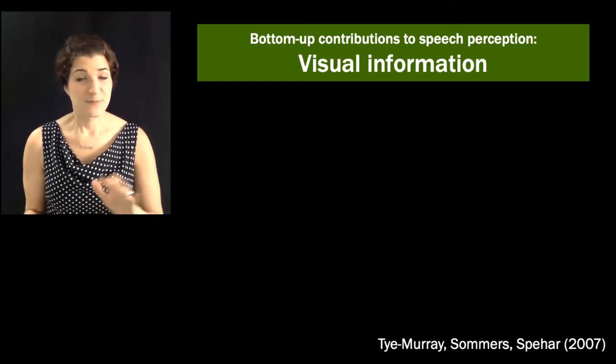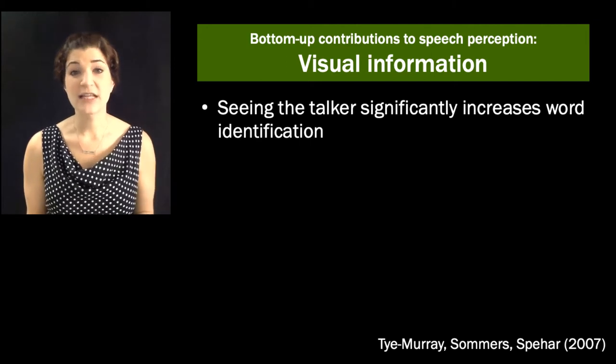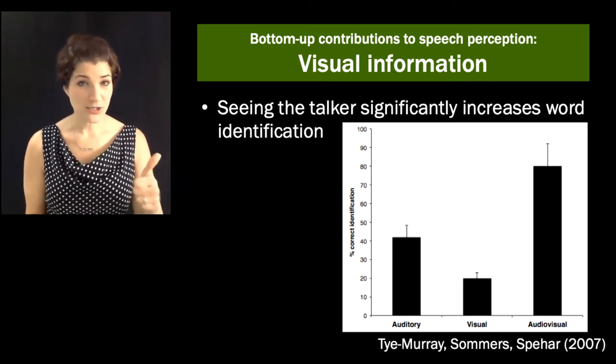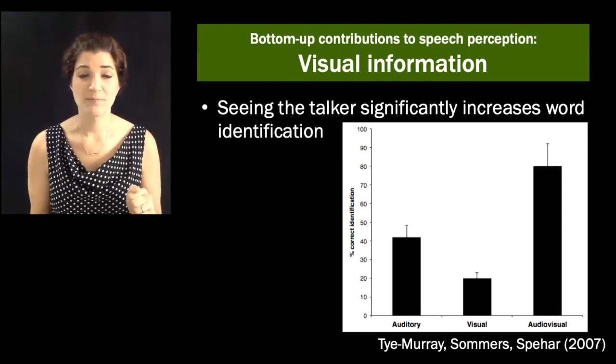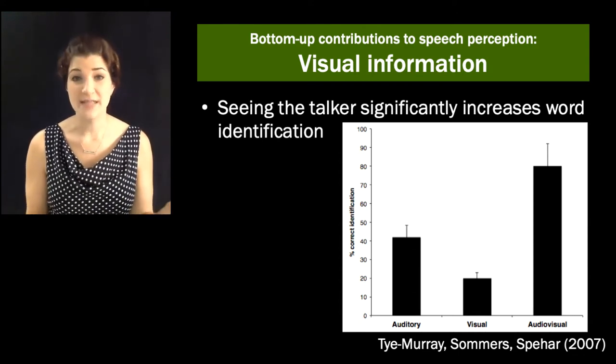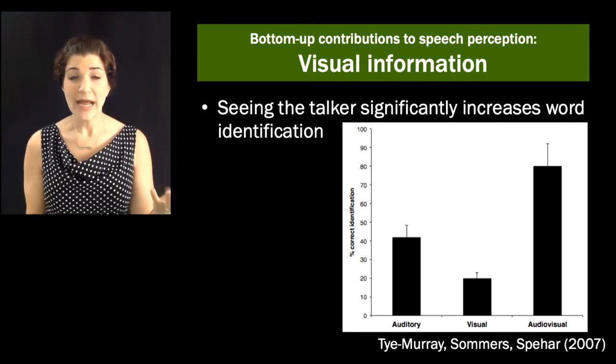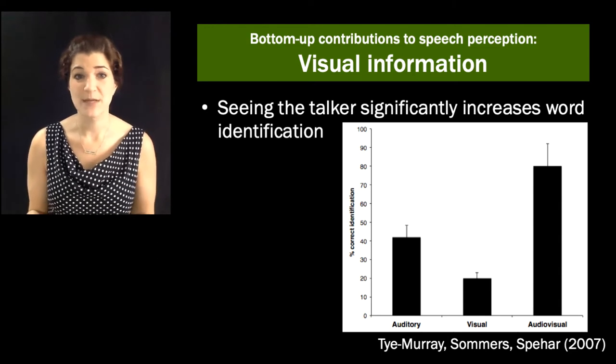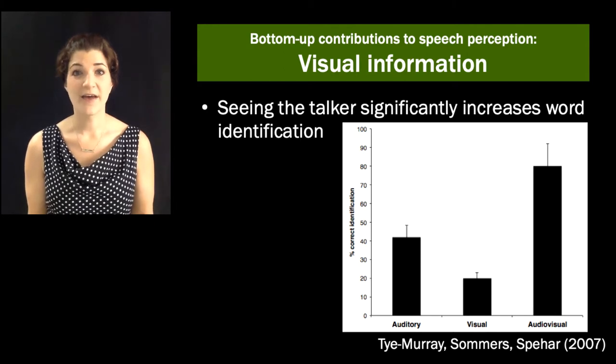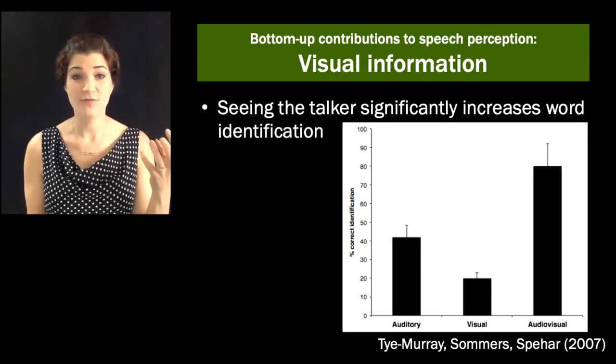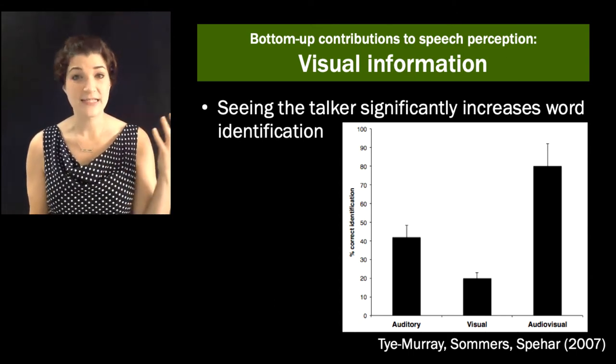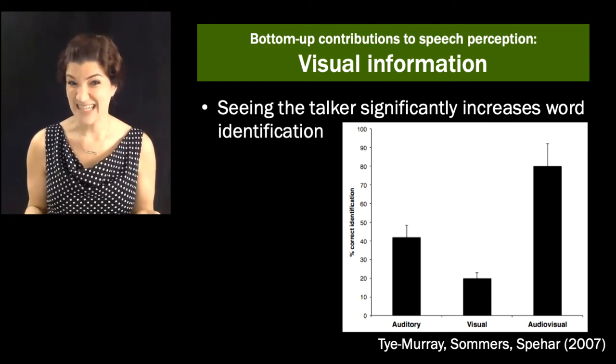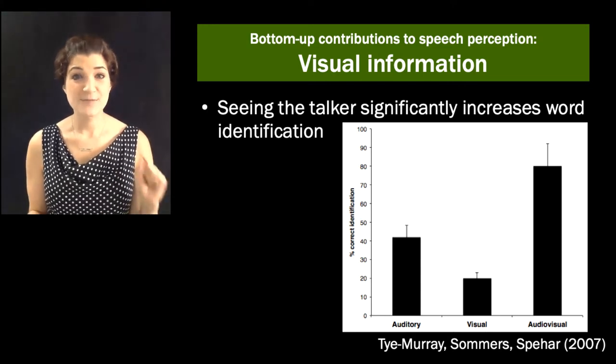So a very robust finding in the spoken word recognition literature is that being able to see the talker significantly increases word identification accuracy. So this represents the accuracy with which people identify words presented in background noise via three mediums: auditory, so just hearing alone, visual only, so just lip reading, and audio visual. And you can see that audio visual is by far the best. It's even better than the sum of audio only and visual only. So when we're seeing a talking face, we're getting bottom-up input about the speech sounds from the audio stream, but we can also see speech on the mouth. The mouth moves very differently depending on the speech sound that's being produced. So check this out. 'Ba, fa, tha.' You can see really different patterns of how my lips and my tongue are visible depending on what I'm saying. So the visual signal contains enough information that it can supplement or complement the auditory signal, especially when the auditory signal is degraded or noisy. You might almost say no sense is an island.